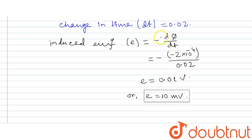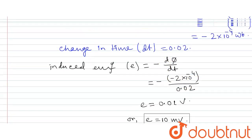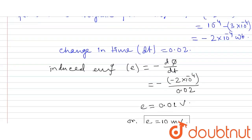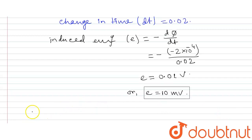For 50 turns, the total change in magnetic flux is the single-turn flux change multiplied by 50. So we multiply 50 times to get the induced EMF for the full coil. Checking the options: option B gives 15V, option C gives 10V. Option C matches — the right answer is E = 10V.